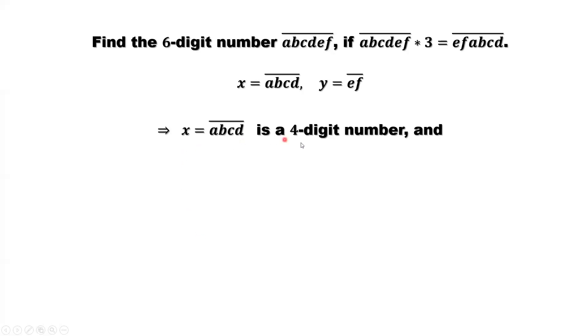So here, X is a four-digit number because a is not zero, bigger than zero. Y equals ef is a two-digit number because e is bigger than zero. Rewrite the original number as 100 times X plus Y. So here, you can see abcd00 equals 100 times X plus Y. Y is the last two digits.